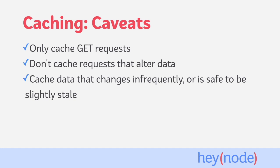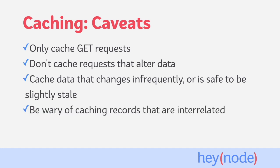It's also a best practice to cache data that doesn't change often. You run the risk of returning stale data if you cache resources that change often or are caching them for longer than is appropriate. Caching is best implemented with data that changes infrequently or is tolerable to be a little bit stale. Caching can also present potential complexity when your data records relate to one another. When updating a record that others depend on, your cached data can become invalid. In this situation, you would want to clear any cached records that relate to the record you have updated. This type of cache clearing can become complicated, so think about how related your data is before deciding what to cache, in order to reduce the complexity of managing your cached data.